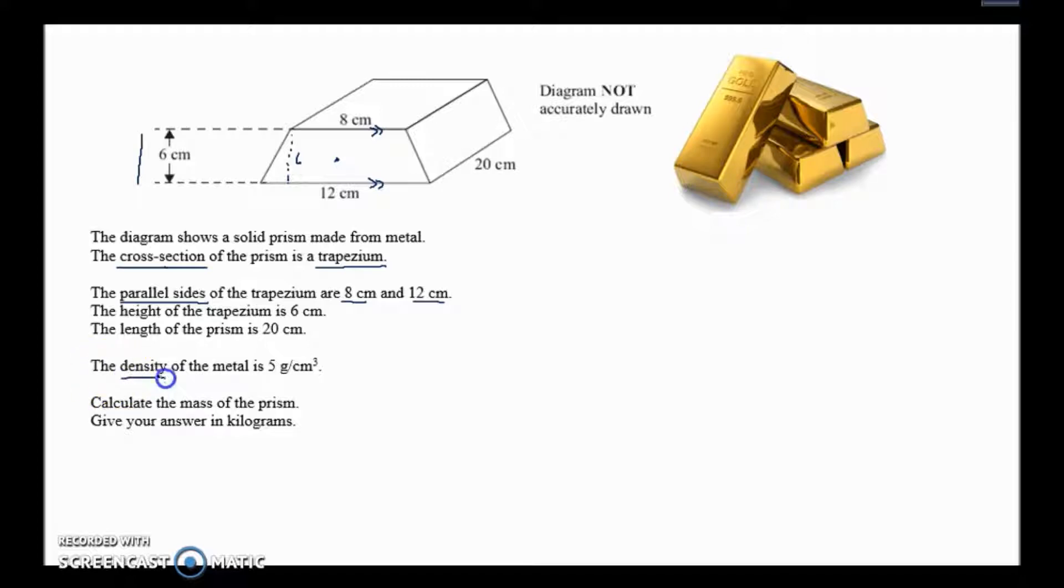They're giving us all the measurements of the prism. What do we actually have to work out? They're also giving us the density, so this is telling me this question is probably to do with density. I've got density, I can probably work out the volume, and it's asking me to calculate the mass of the prism. Give your answer in kilograms.